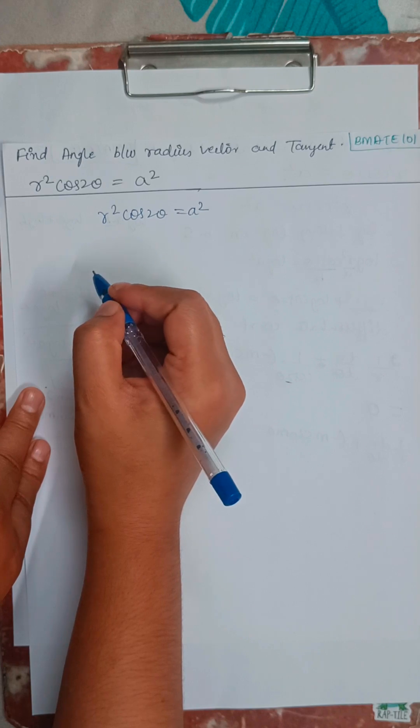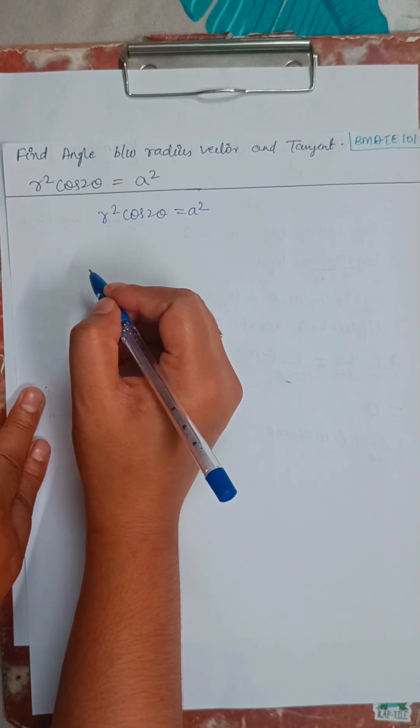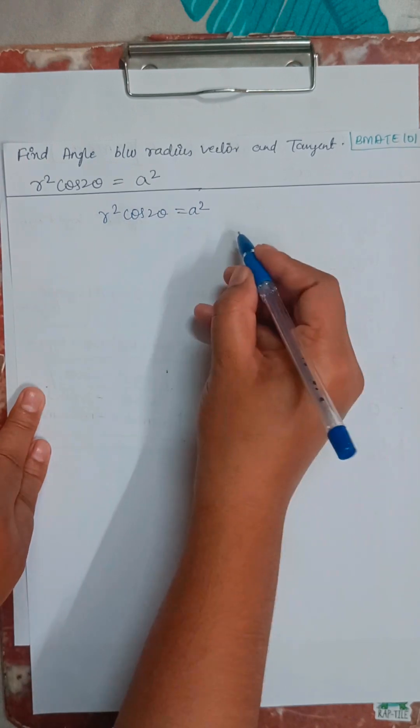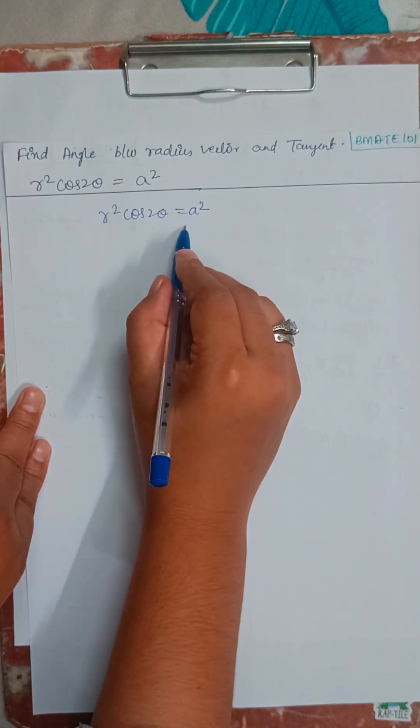Similarly, like we have done in the previous question, that is r equals a times 1 minus cos theta, we will be doing it here also.